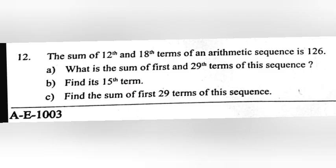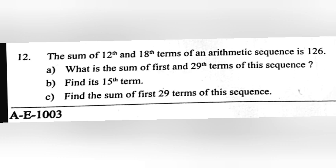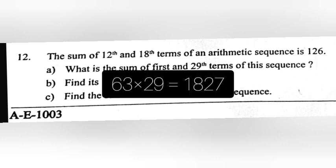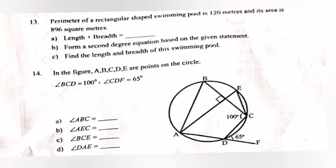Question 12: The sum of the 12th and 18th terms of an arithmetic sequence is 126. Part A: What is the sum of the 1st and 29th terms? Answer: 126. Part B: Find its 15th term. Answer: 63. Part C: Find the sum of the first 29 terms. Answer: 63 into 29 equals 1827.